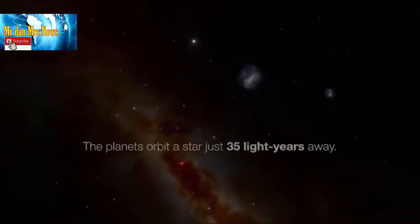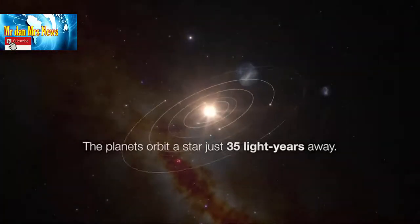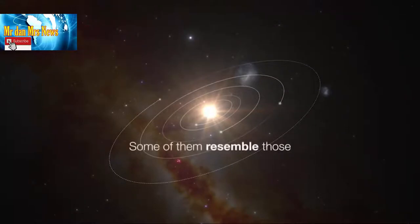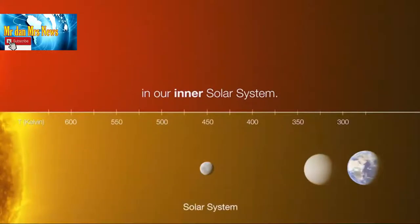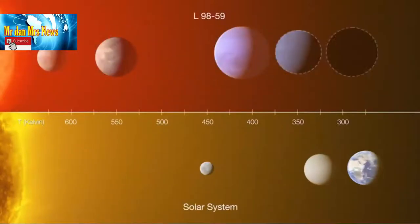Sementara itu, massa planet ketiga bisa memiliki kandungan 30% air. Hal ini menunjukkan bahwa eksoplanet tersebut memungkinkan mirip dengan beberapa bulan yang ditemukan di tata surya.